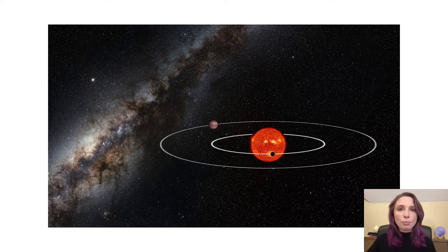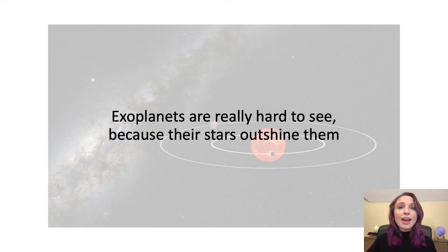But there's a problem. Exoplanets are really hard to see. And that's because they orbit very close to very bright stars. These stars are so bright that they almost entirely outshine the planets next to them. In fact, trying to see an exoplanet directly is like trying to see a firefly next to a car headlight. The car headlight is going to almost entirely wash out the firefly, and you're going to need some very special technology to try to see it.